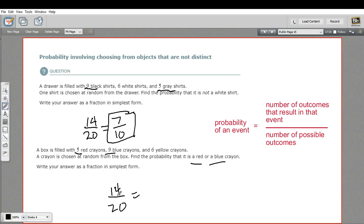So that's the chance it's red or blue. And again, this simplifies to seven-tenths. So that is how to find the probability of picking a certain color shirt, sock, or crayon from a box.